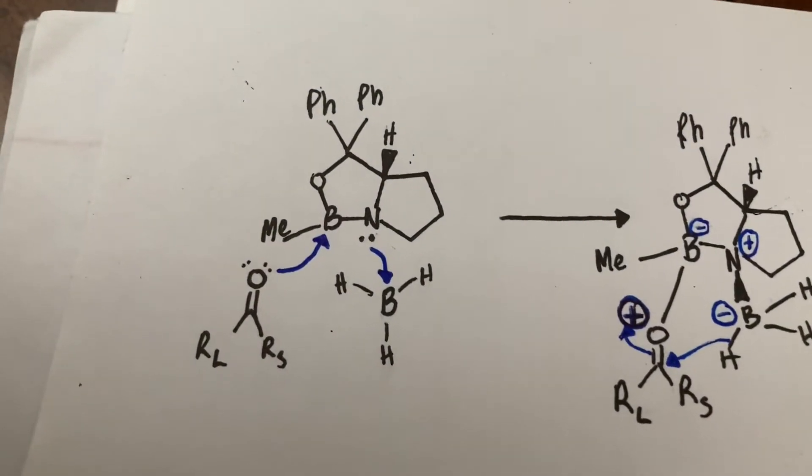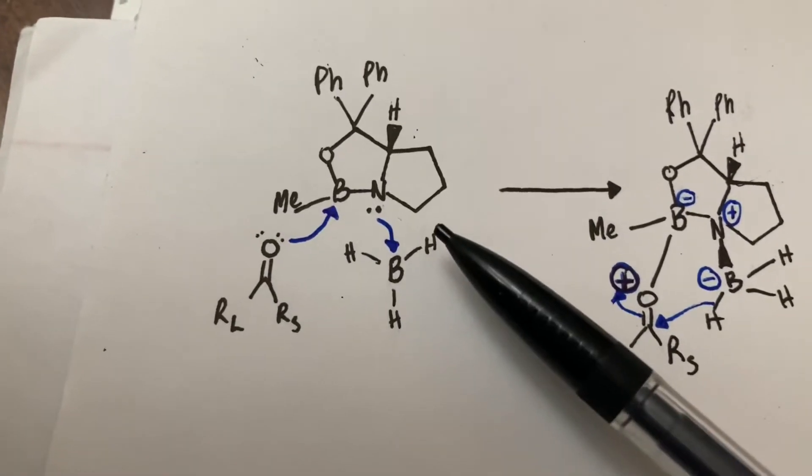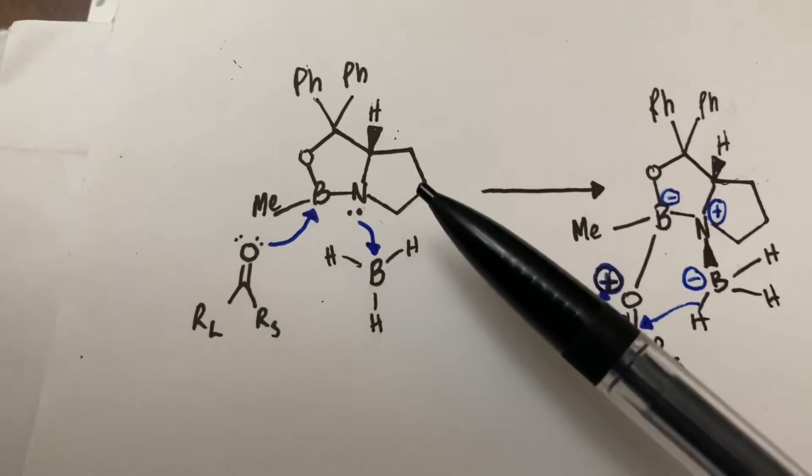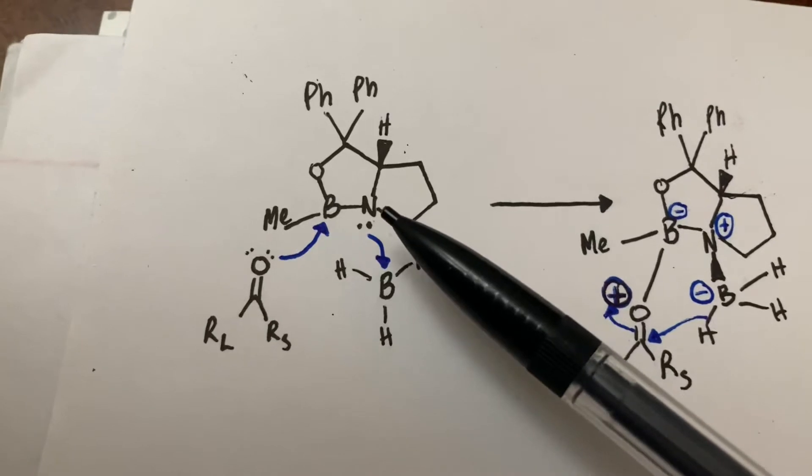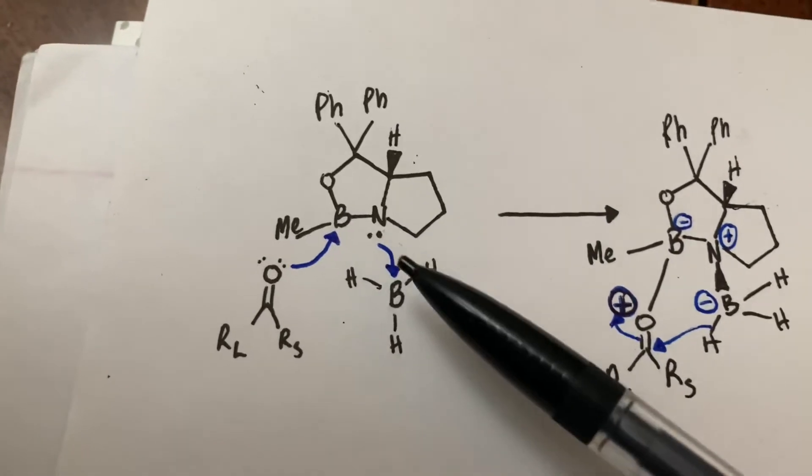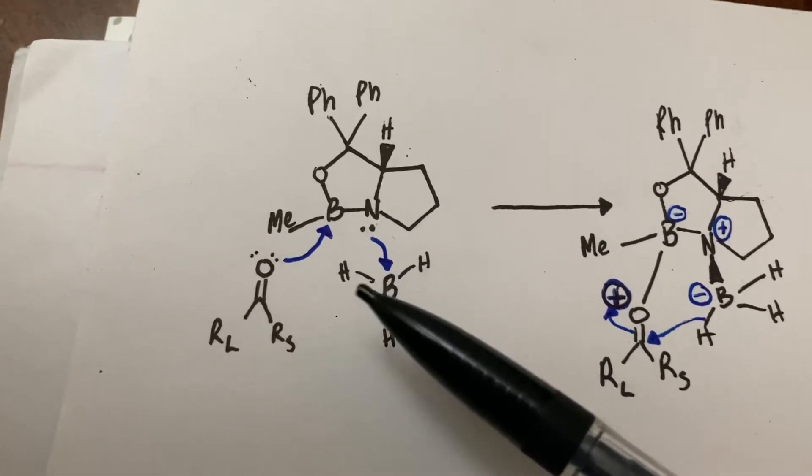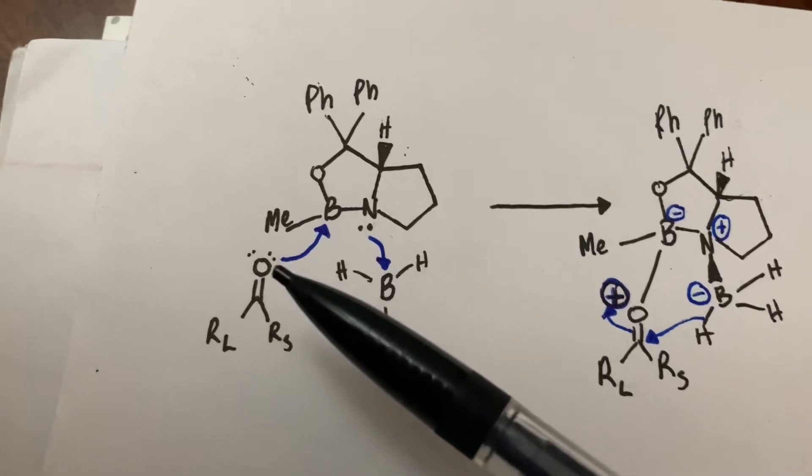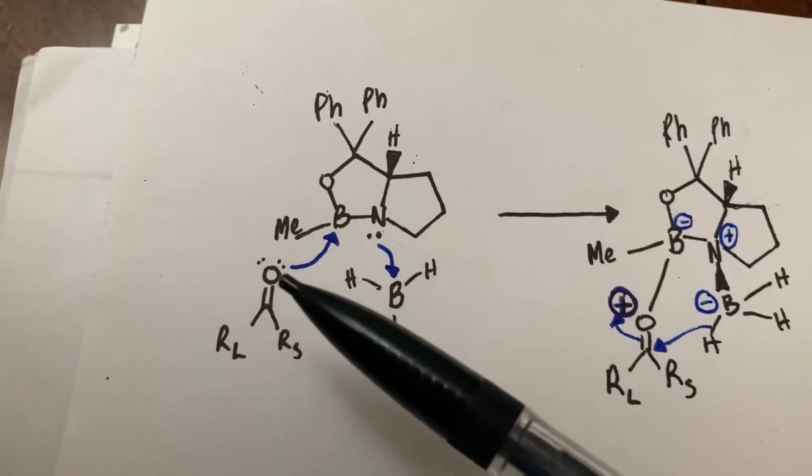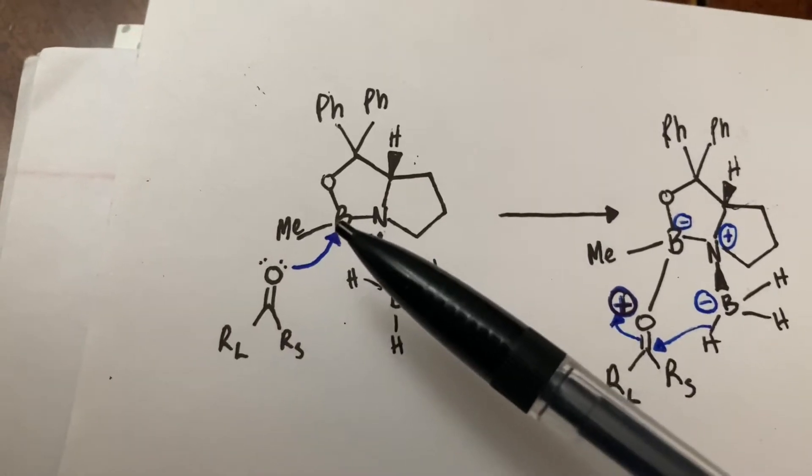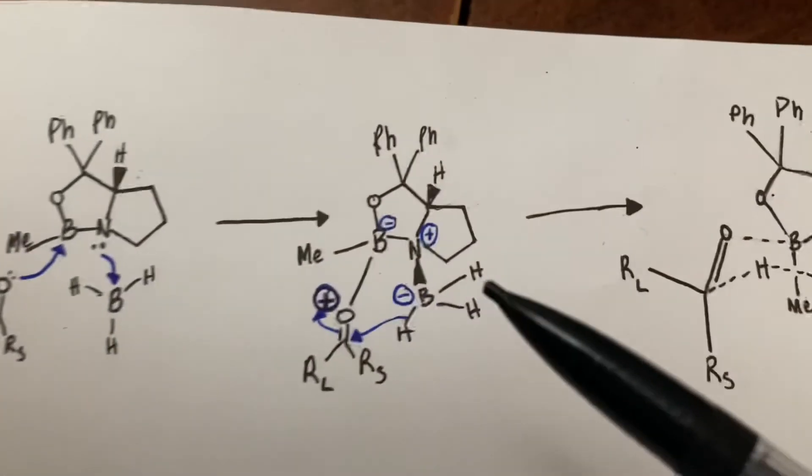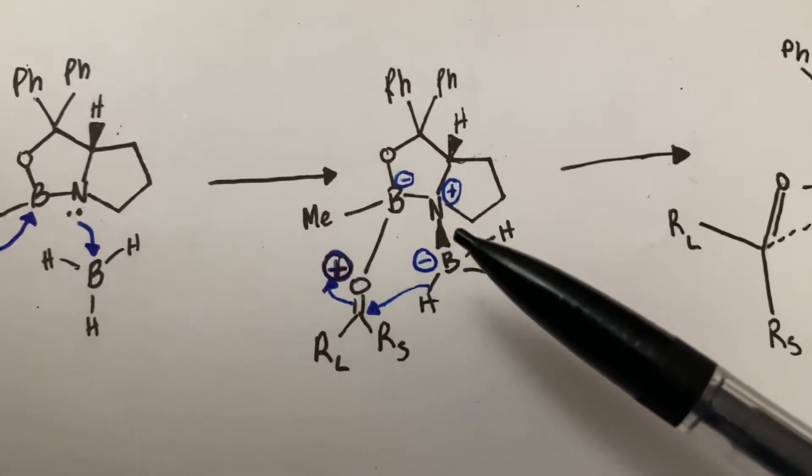For this description, I'll be using the S-configuration of the catalyst. The reaction starts when this nitrogen acts as a base, latching onto the borane molecule, and the ketone acting as a base latches onto this boron atom, producing this product with a bunch of charges.